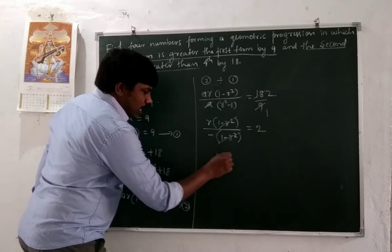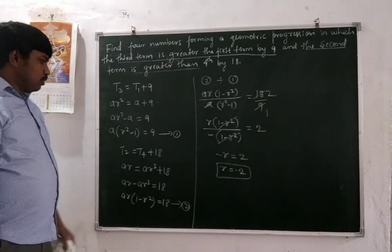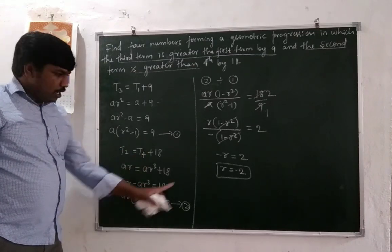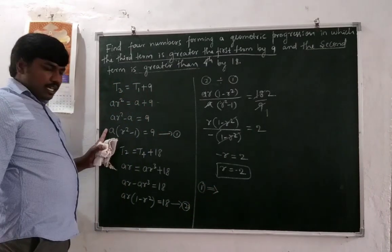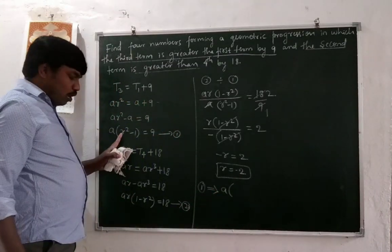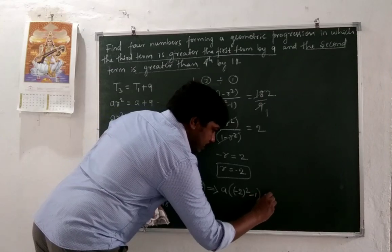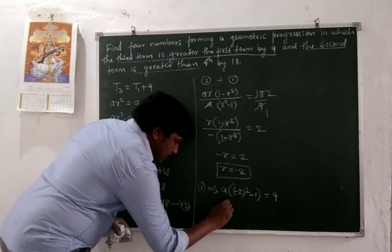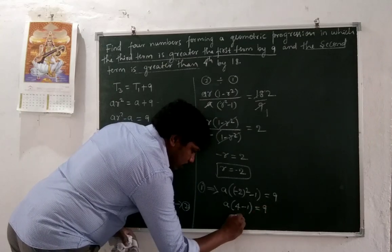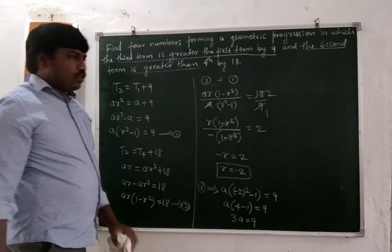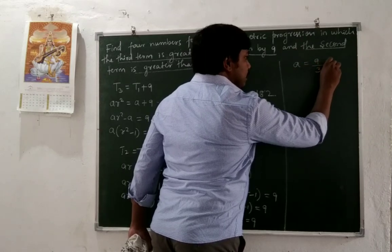So minus r divided by minus 1 equals 2, giving r = -2. The common ratio is -2. Substituting r = -2 into equation 1: a(r² - 1) = 9, so a((-2)² - 1) = 9, meaning a(4 - 1) = 9, so 3a = 9, therefore a = 3. The first term is 3.